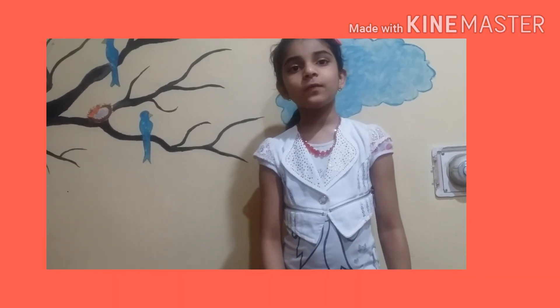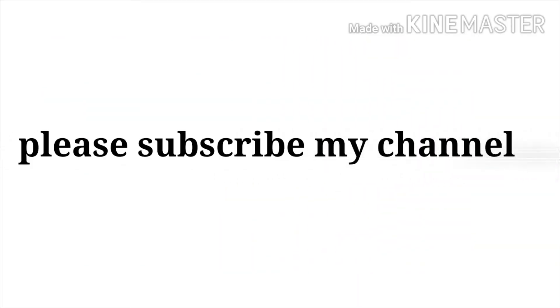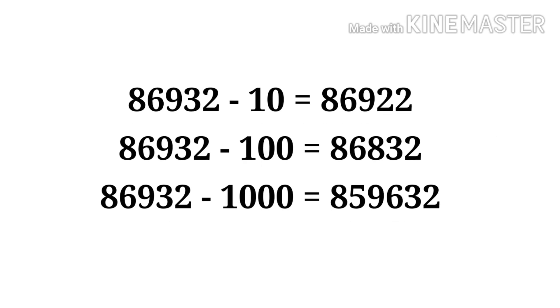Now let's see how we can subtract ten, hundred, and thousand from big numbers. While subtracting ten, hundred, or thousand from a number, we notice that the digit in the tens, hundreds, and thousands place decreases by one respectively, while the other digits remain the same.